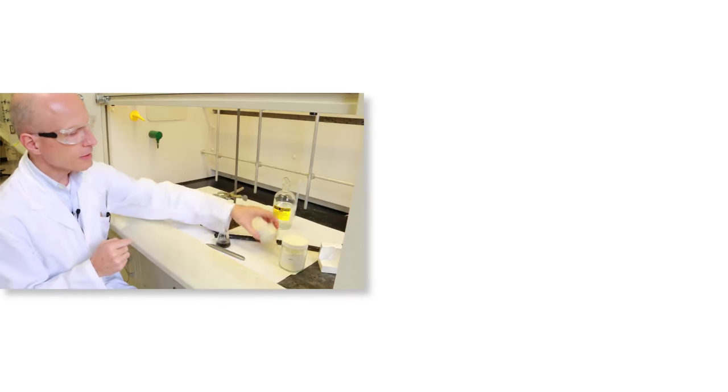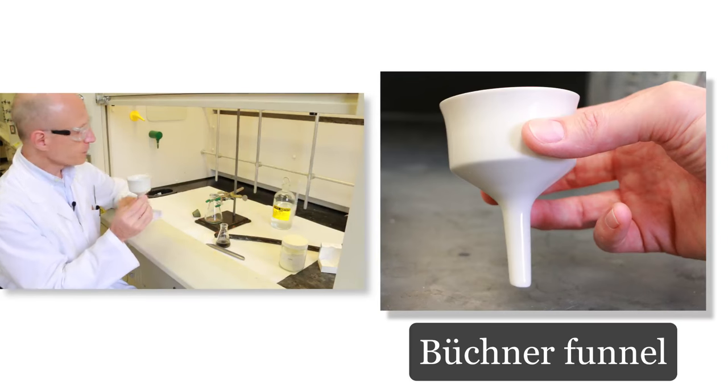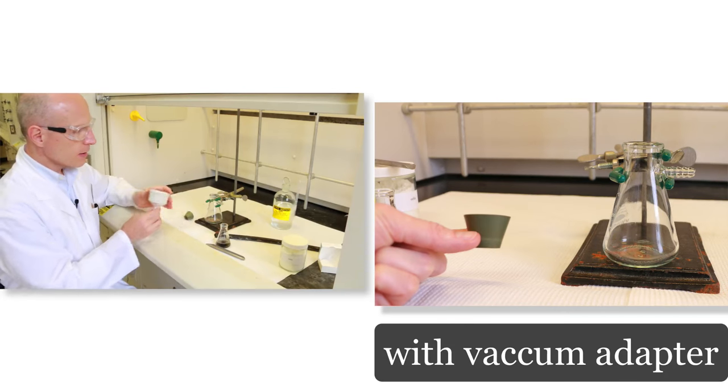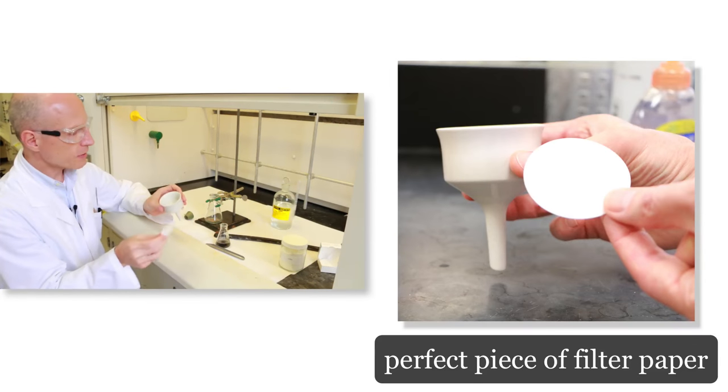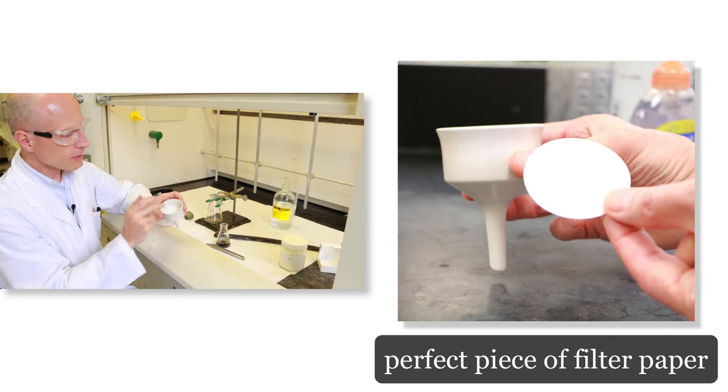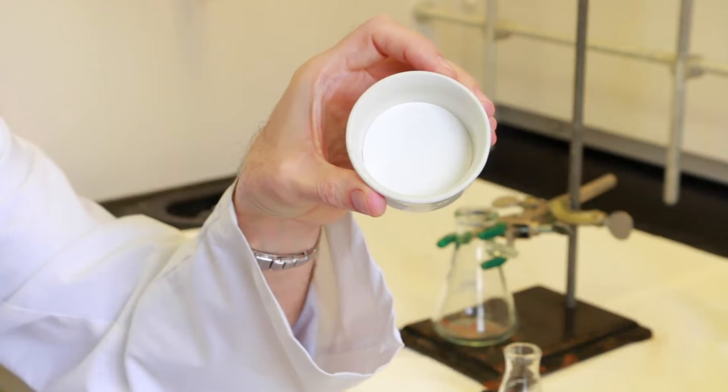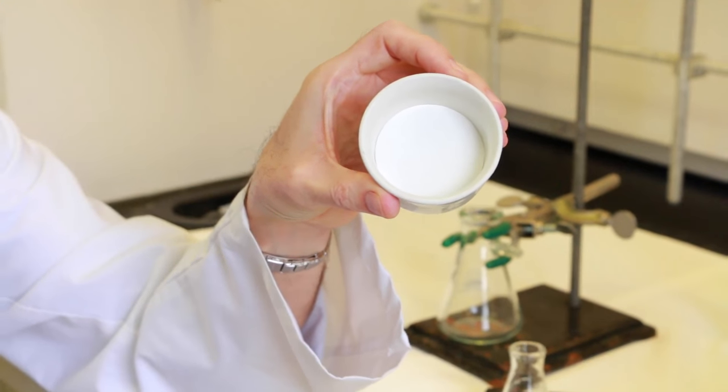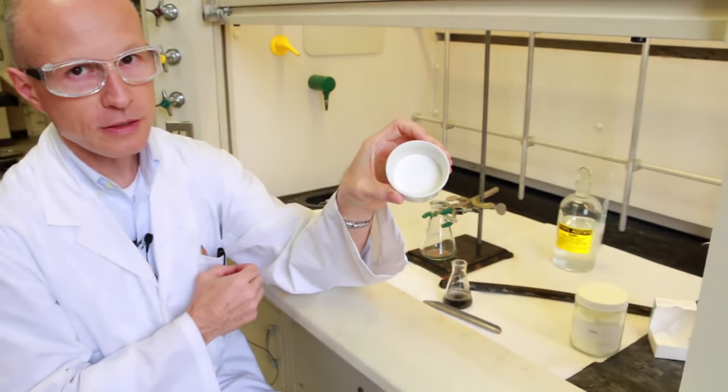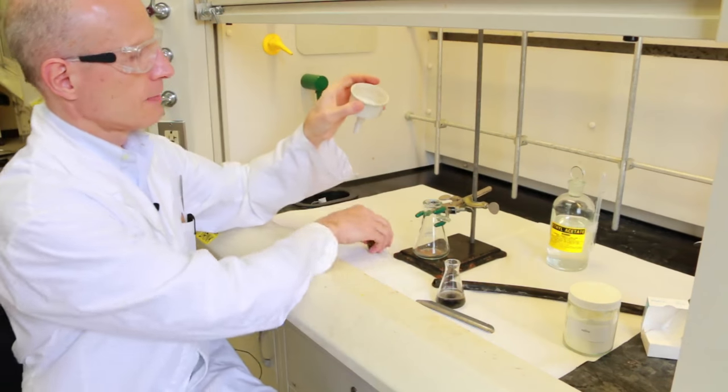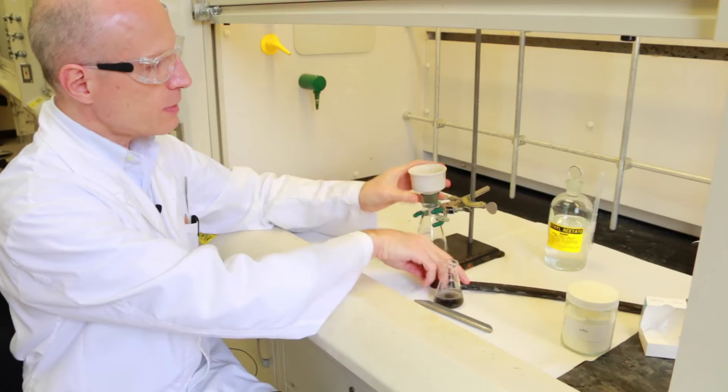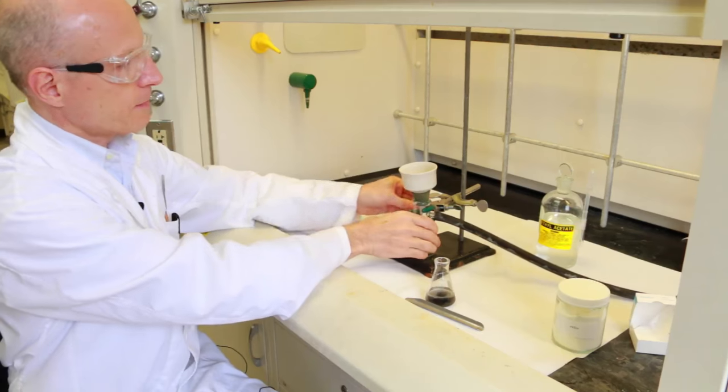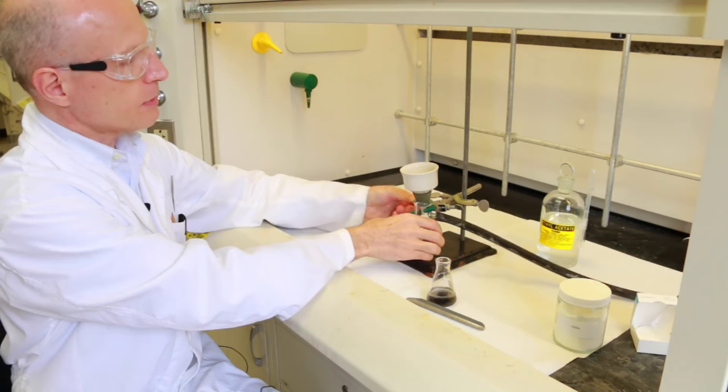You will need a Buchner funnel, a clean filtering flask with a vacuum adapter, and a piece of filter paper that fits perfectly inside your Buchner funnel. It cannot be too small or too big that it climbs on the walls of the funnel. Then you set up your filtering apparatus and clamp the filtering flask.